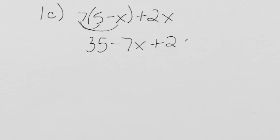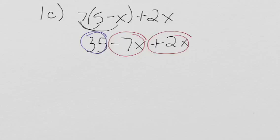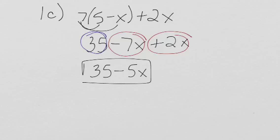And I still have a plus 2x to bring down. Now I can combine my like terms — minus 7x and plus 2x are like terms, and 35 doesn't have anything to combine with. So I bring down my 35, and minus 7x plus 2x is minus 5x. This makes my final solution 35 minus 5x.